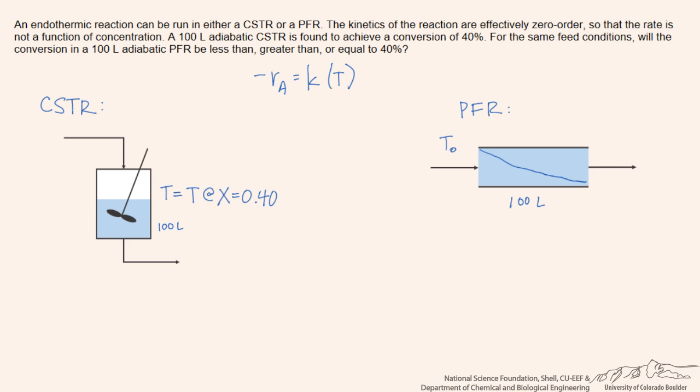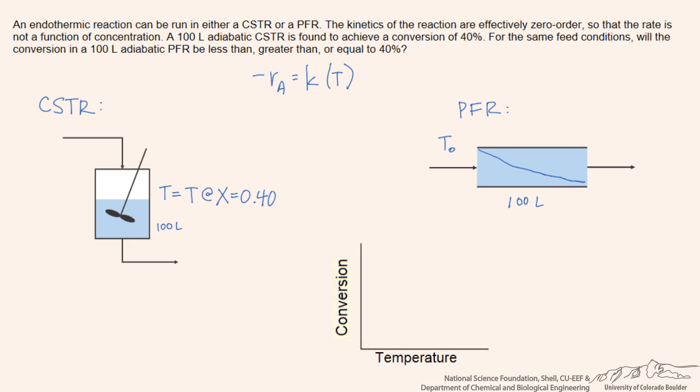To see how this is going to vary in an adiabatic reaction, we can plot the relationship between conversion and temperature. What we expect is that as the reaction proceeds and the conversion goes up, then the temperature is going to go down.